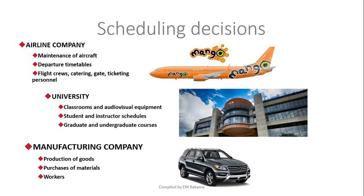Another example is in a manufacturing company. They can schedule the production of goods, the purchase of materials, and the workers — when workers are going to be available to do specific jobs. So when should we order our next product, knowing that we need to deliver it on a certain due date? Those are the important questions to ask. Realize that there's no single fixed way of scheduling; depending on the company and the final product, there are various ways to schedule your decisions.